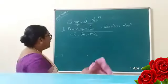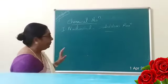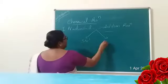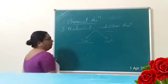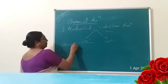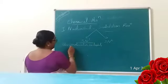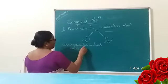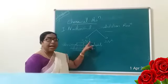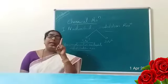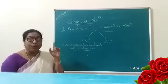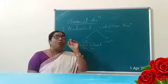In the case of haloalkanes, there are two types of nucleophilic substitution reactions: SN1 and SN2. SN1 is the unimolecular nucleophilic substitution reaction. As the term indicates, 'unimolecular' means the rate of reaction depends only on the concentration of one reactant.